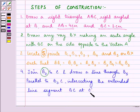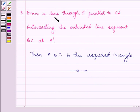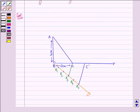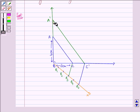Now the next is to draw a line through C dash parallel to CA intersecting the extended line segment BA at A dash. So now we need to draw a line through C dash intersecting the extended BA at A dash. And A dash BC dash is the required triangle.